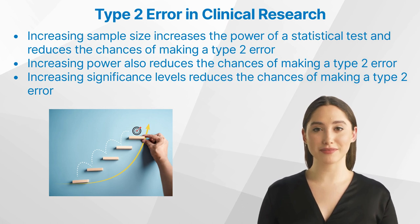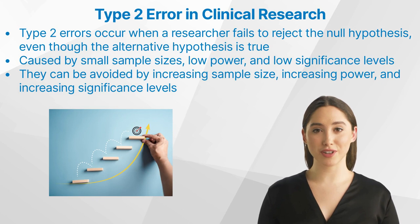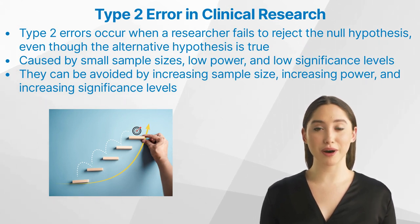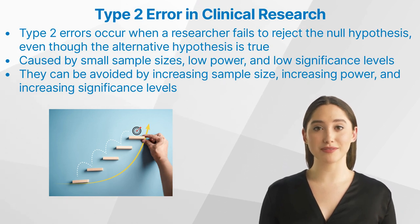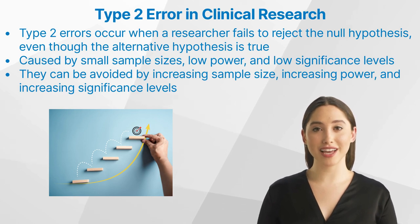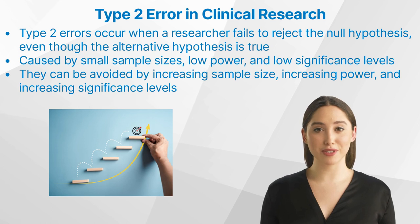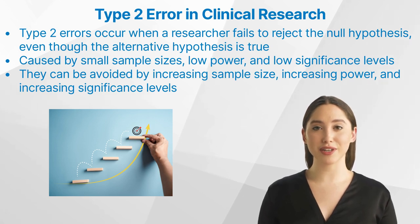In conclusion, Type 2 errors occur when a researcher fails to reject the null hypothesis even though the alternative hypothesis is true. They can be caused by small sample sizes, low power, and low significance levels. Type 2 errors can be avoided by increasing sample size, increasing power, and increasing significance levels. By taking these steps, researchers can reduce their chances of making a Type 2 error and ensure that their results are accurate and valid.